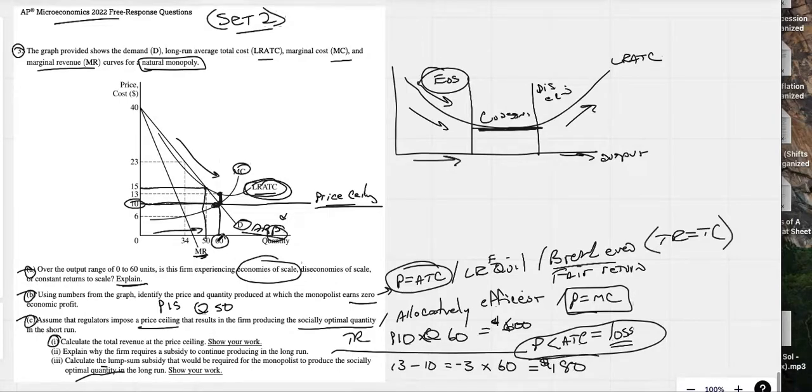When they produce those 60 units, they will go broke in the long run if they don't have that money made up. That lump sum subsidy would be given to them of $180 and that would keep them operating in the long run.